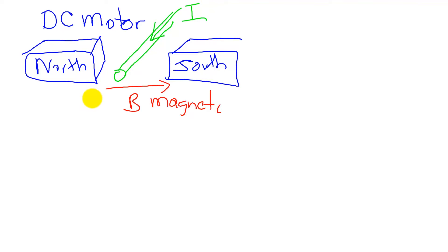So if current flows through this wire and this wire is perpendicular to the magnet, then what will happen is a force will be induced on the wire such that the magnetic field, the electrical current and the force are all orthogonal to each other.